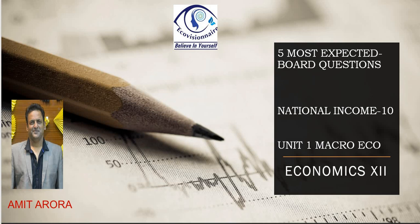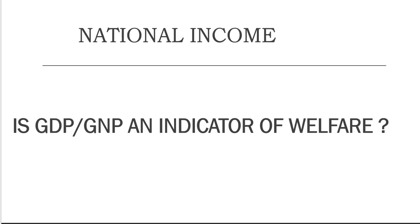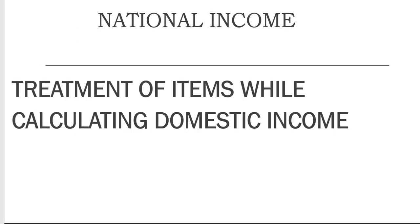The first topic which has been repeatedly coming in this chapter is: Is GDP/GNP an indicator of welfare? This topic appears in different ways — sometimes they ask 4 points comprehensively, and sometimes individual points as a question. So the first expected question is: Is GDP/GNP an indicator of welfare? Does a country's GDP increasing indicate an increase in welfare? You can check the answer from any book — it is available everywhere.